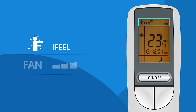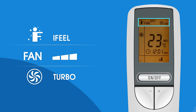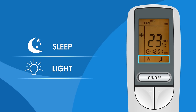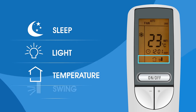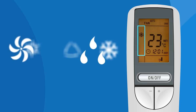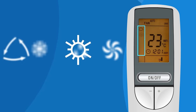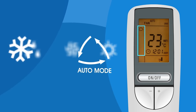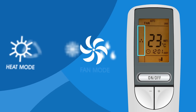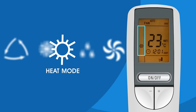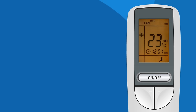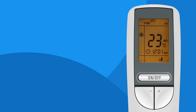The middle section displays temperature and clock. The top section displays the I Feel icon, fan speed, and turbo icon. The bottom section displays sleep icon, light icon, temperature icon, swing icon, and remote lock icon. The left section displays five different modes: auto mode, cool mode, dry mode, fan mode, and heat mode. Note that heat mode is not available in all split air conditioners.